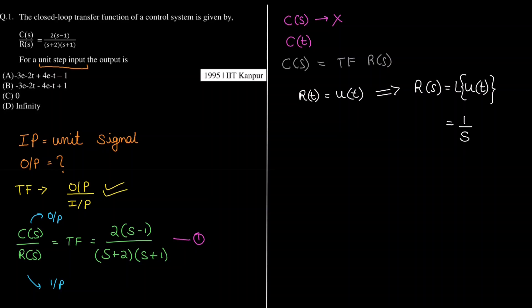On substituting, C(s) equals transfer function divided by s. From equation 1, the transfer function is 2 times (s minus 1) divided by (s plus 2) into (s plus 1). Multiplying by 1 by s, we have C(s).